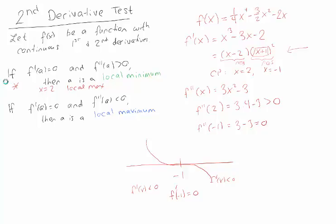We probably suspect it's an inflection point. To verify that, we have to look at the second derivative — it should change signs there. Remember, an inflection point is where concavity changes, meaning the second derivative changes signs. To the left of -1, the second derivative is positive, so it's concave up. To the right of -1, closer to 0, it's going to be negative, so it's concave down. So in fact x = -1 is an inflection point. It could have been a local maximum — it's not certain that if the second derivative is 0 it's an inflection point. It just happened to be that way this time.